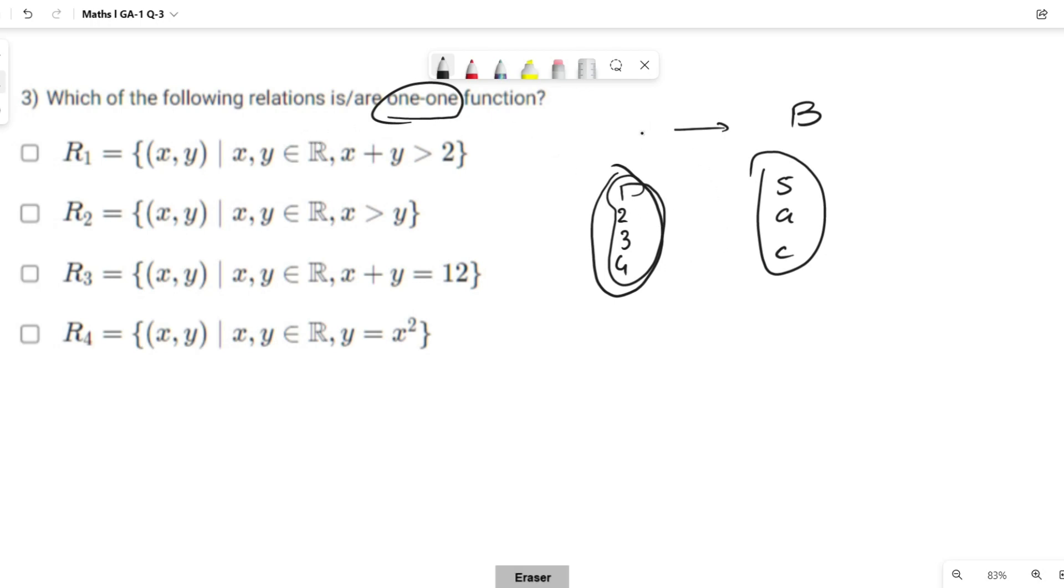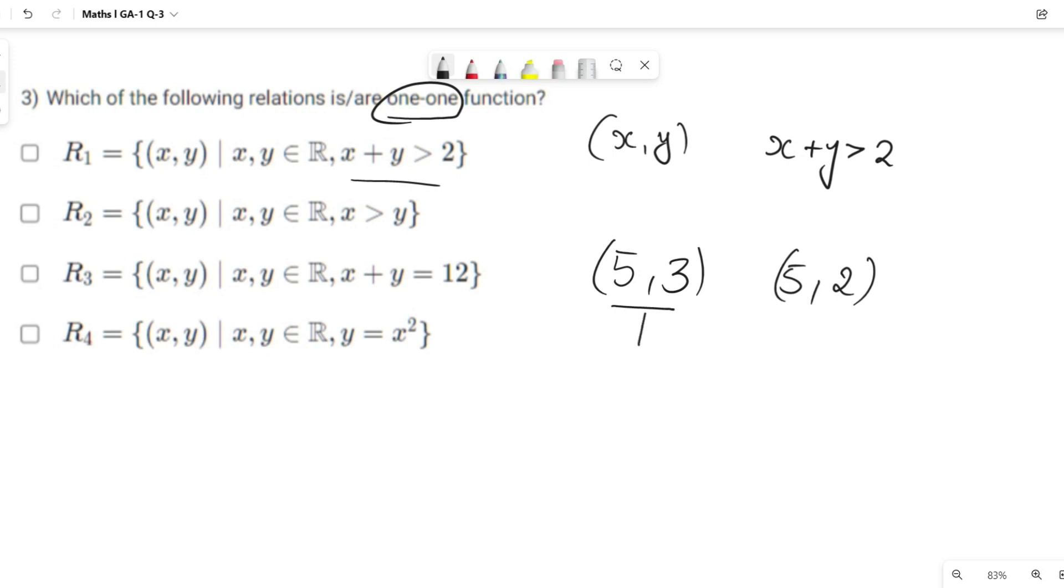Let me test this out. x + y > 2. We have to check order pair (x, y) where x + y > 2. Let us take (5, 3) and (5, 2). This satisfies the relation. 5 + 3 = 8 which is greater than 2, also 5 + 2 = 7 which is again greater than 2.